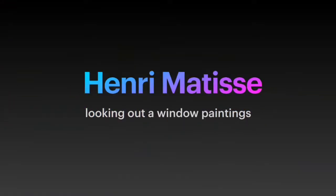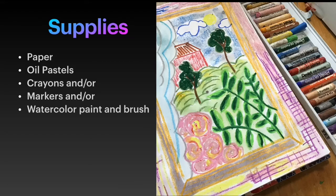Henry Matisse made so many artworks, from his paper cut-out shapes to his many paintings and even some stained glass work. There's so much to learn about him. I love to teach about his paintings because he gives us permission, in a way, to just paint what's in front of us and to have fun with color, use details and shapes, and not worry if it's not exact.